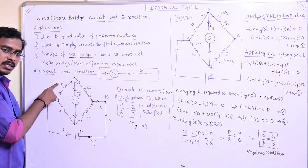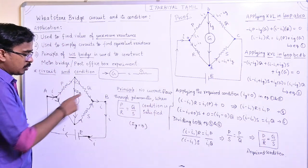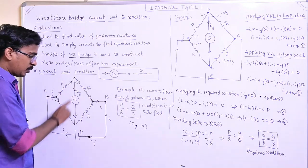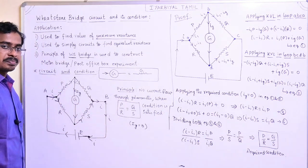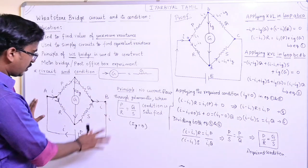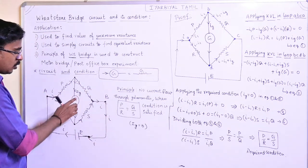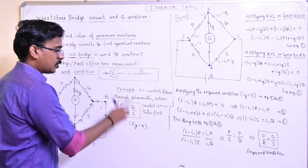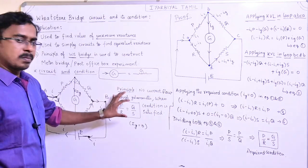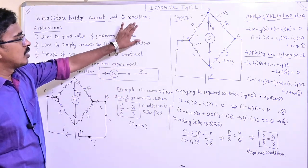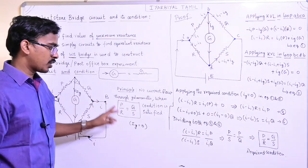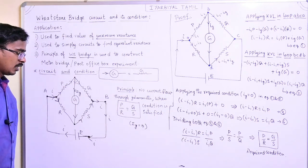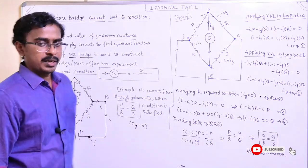When the condition P by R equal to Q by S is satisfied, Ig goes to zero — the current through the galvanometer is zero. One battery is connected, current flows through the circuit. If P by R equals Q by S, this is the principle and condition of the Wheatstone Bridge.